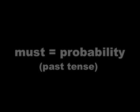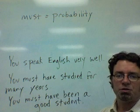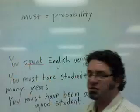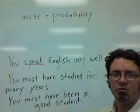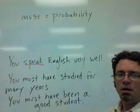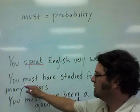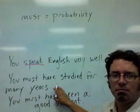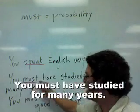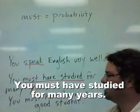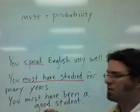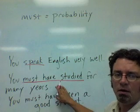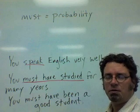You speak English very well — this is in the present tense describing present reality. And in this sentence describing a past situation: you must have studied for many years. This is past probability — 'must have' plus the past participle.